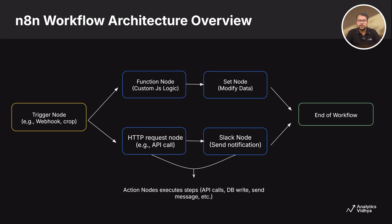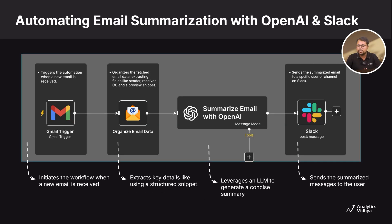Let's look at a real-world use case. Imagine you are a busy manager getting hundreds of emails — you want just the summary, not the noise. A trigger node starts when the email arrives in your inbox. Then a function node or OpenAI integration pulls out key information and summarizes the content. Then the Slack node sends you a short summary like 'Subject: meeting request tomorrow at 3 p.m.' So instead of reading 50 emails, you just read five short Slack messages and your productivity is upgraded.